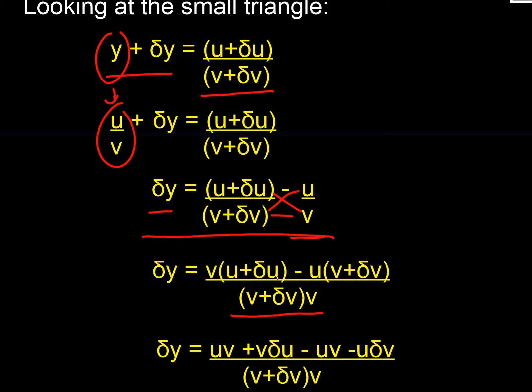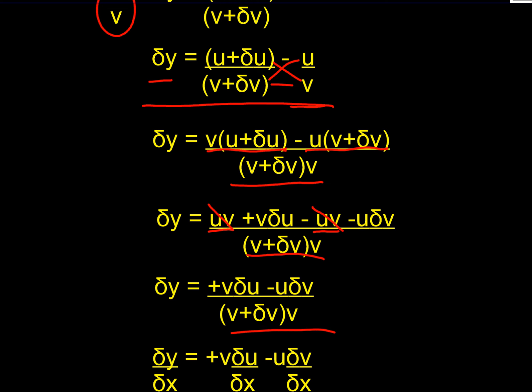On the top left-bottom right combination, we have v(u + δu). On the top right-bottom left, we have subtract u times (v + δv). We expand the brackets and find that we've got uv in both brackets, so they cancel out. That leaves us with vδu minus uδv. On the bottom, we have just our denominator.